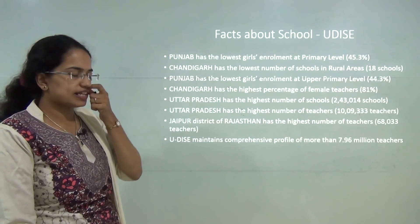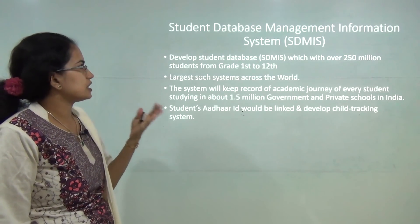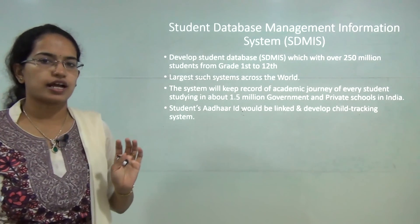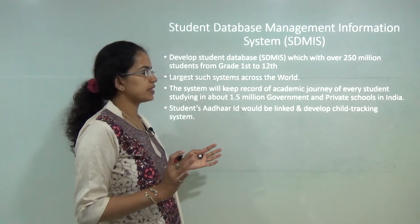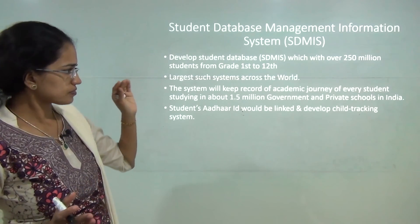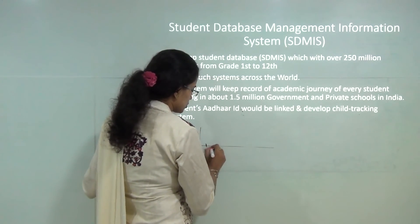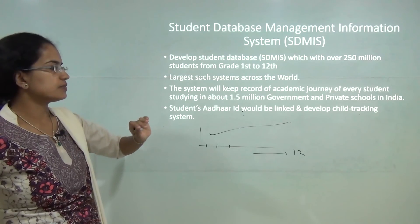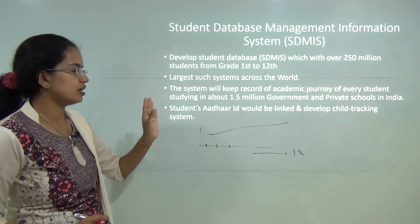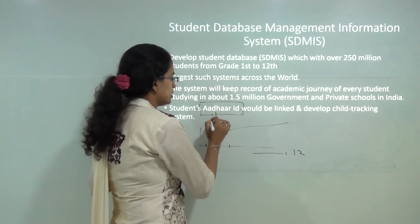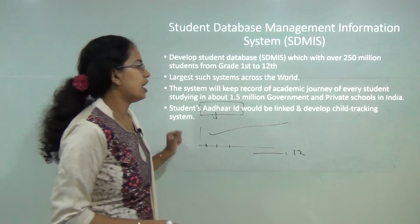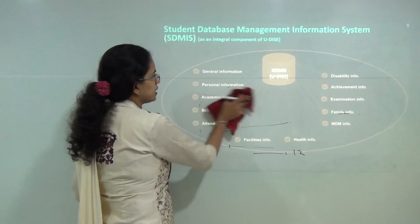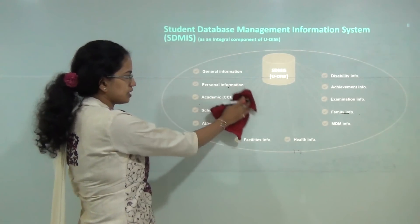Based on NUEPA's findings, another initiative was created: SDMIS, the Student Database Management Information System — again the largest of its kind in the world. Nearly all students enrolled in grades 1 to 12 are part of this system. An academic track is maintained from class 1 through class 12, with a progress report for every individual student. Every student's Aadhar card is linked to this system, making it easy to analyze merit or means scholarship needs and developing a child tracking system covering both government and private schools.